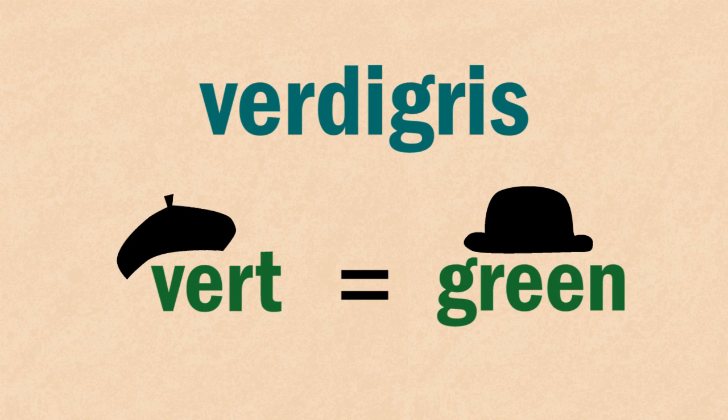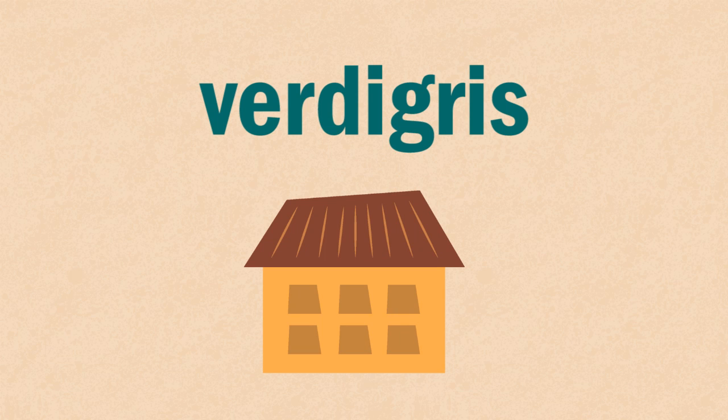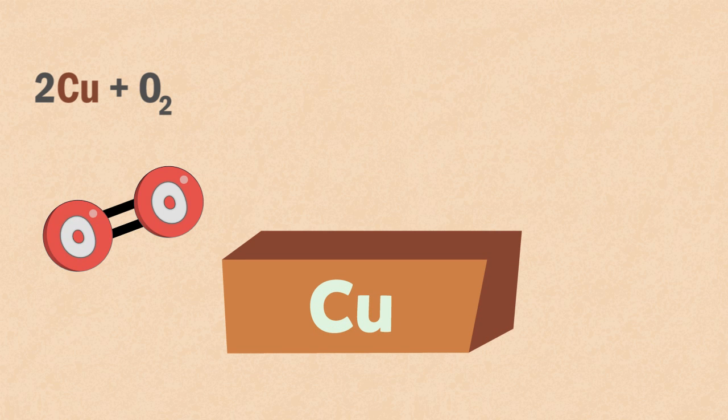vert being the French word for green, on buildings roofed with copper. This happens slowly over time as the copper is oxidised by the oxygen in the air.